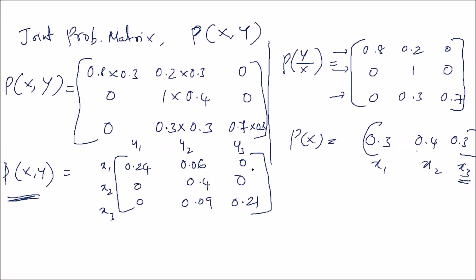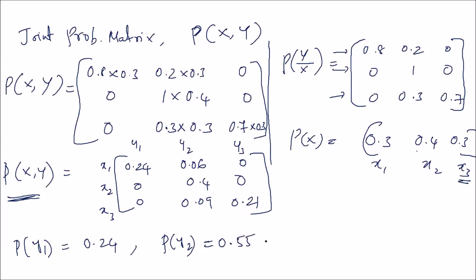Adding the elements in the y1 column: P(y1) = 0.24 (other elements are zero). For P(y2), the sum is 0.06 + 0.4 + 0.09 = 0.55. For P(y3), we get 0.21. So we have derived the individual output probabilities P(y1)=0.24, P(y2)=0.55, P(y3)=0.21 from the joint probability matrix.